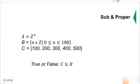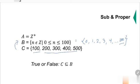C is a subset of B. Can I find all the elements of C in B? 100 is there, but not the rest. I can't find 200, 300, 400, and 500 in B. So this is false.